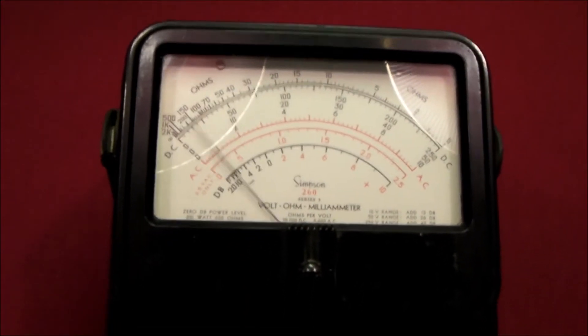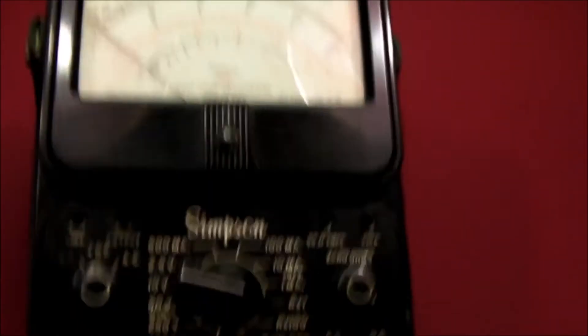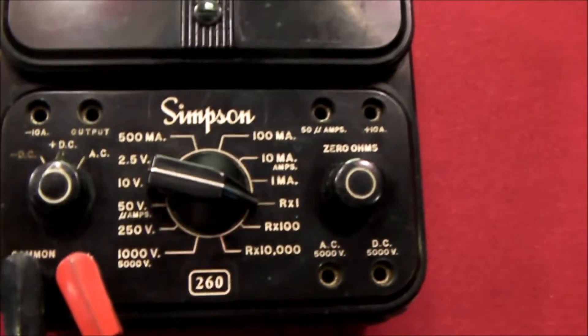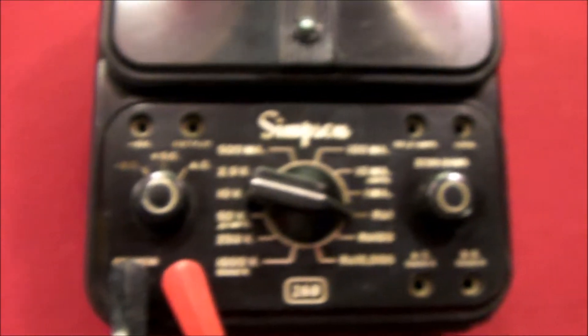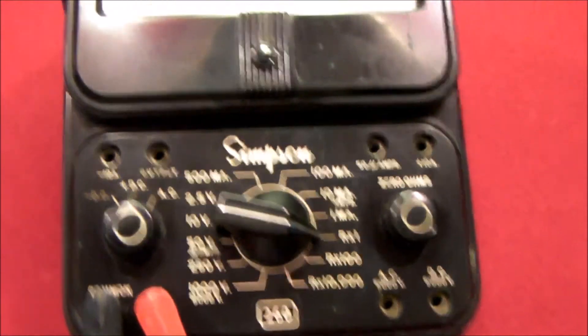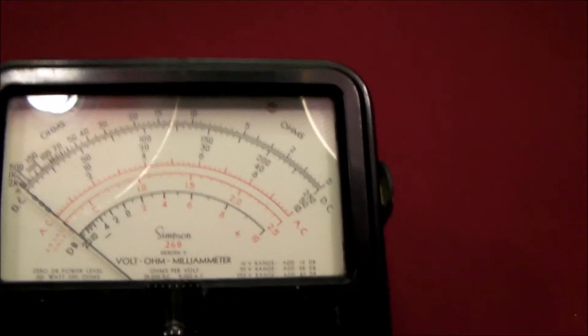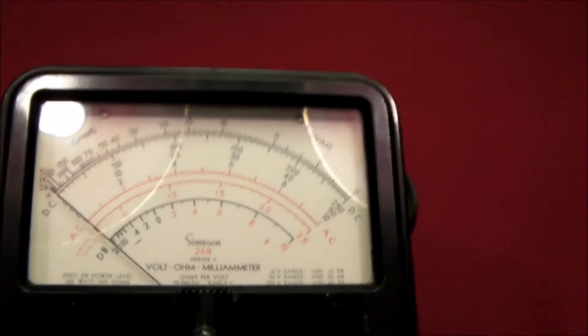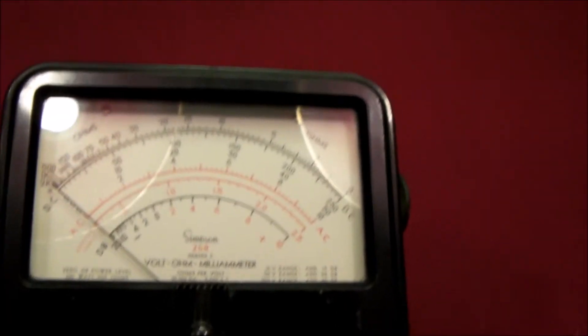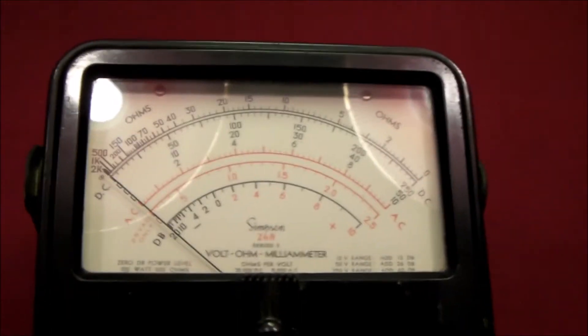I will tell you I did run into one little problem. Once I got my 117.7k ohm resistors in and the new zero ohm potentiometer adjust, I could not get full scale reading on the R times 10,000. R times 1 and R times 100 work just fine, but for some reason R times 10,000 I can only get it up to maybe half scale or a little beyond that.